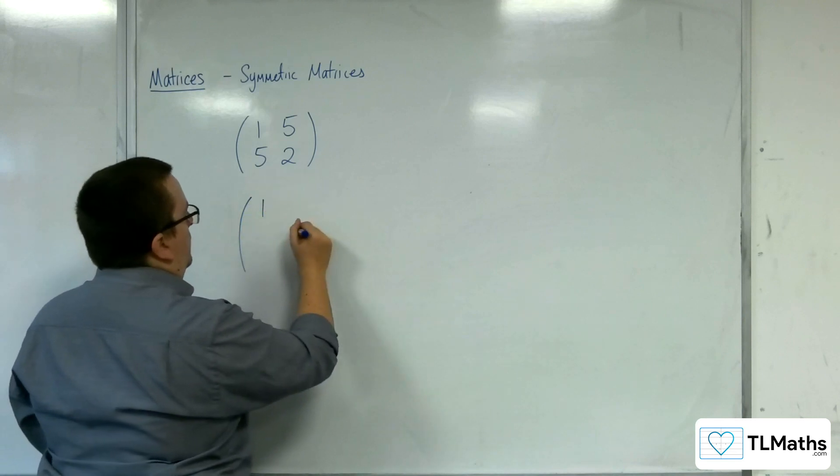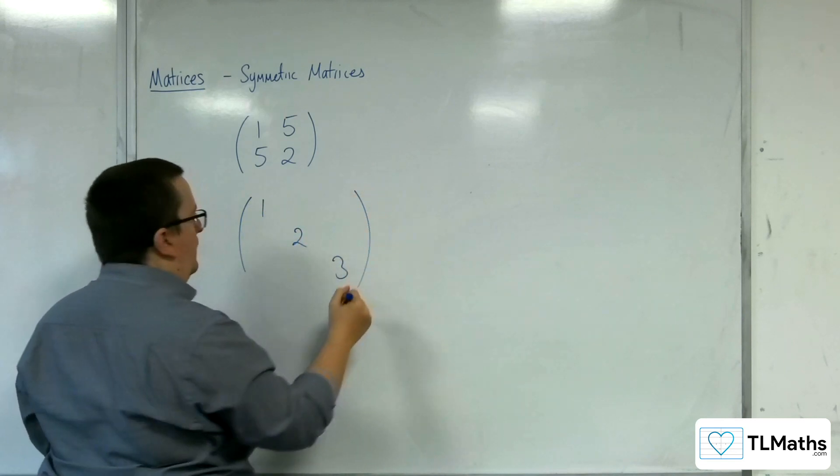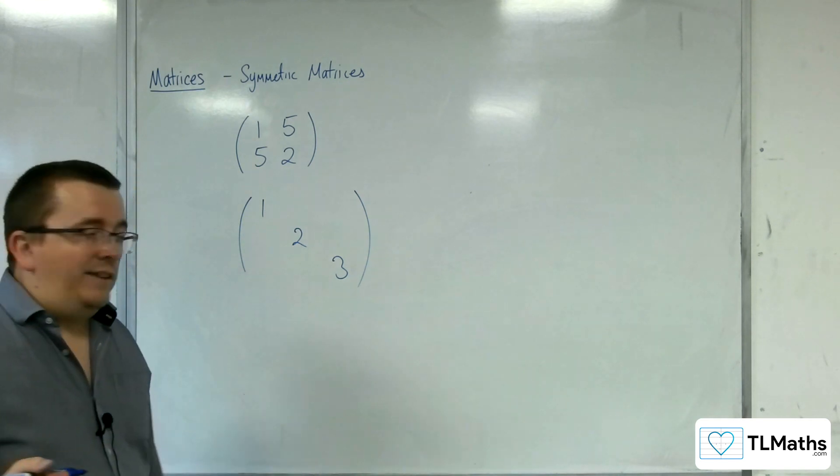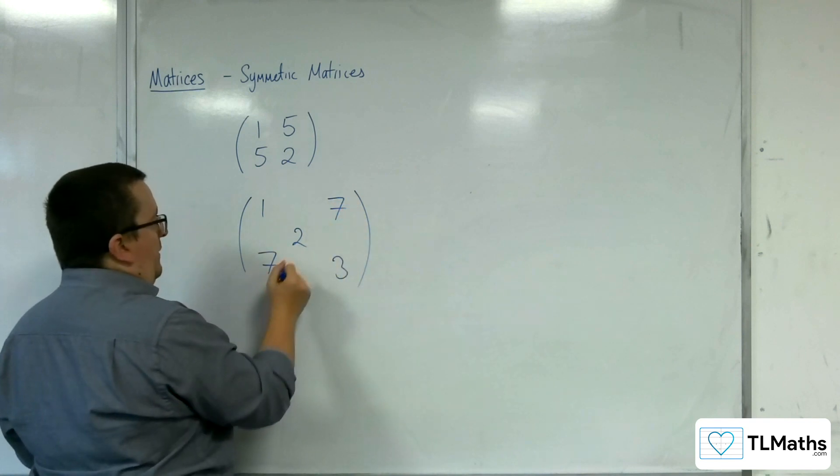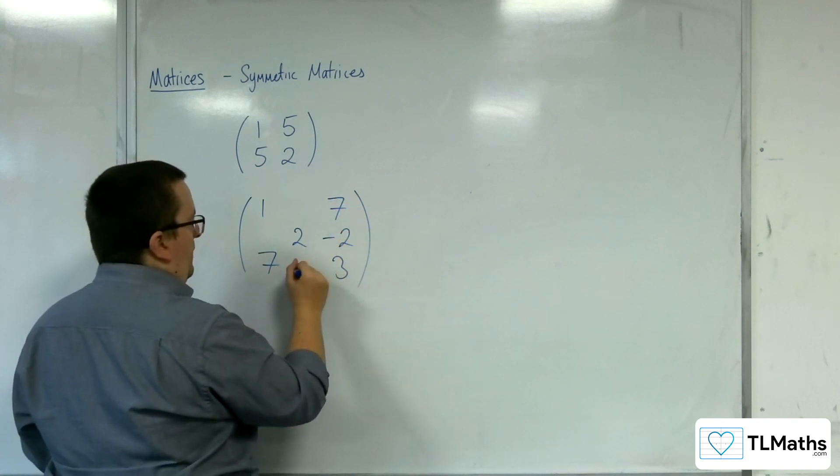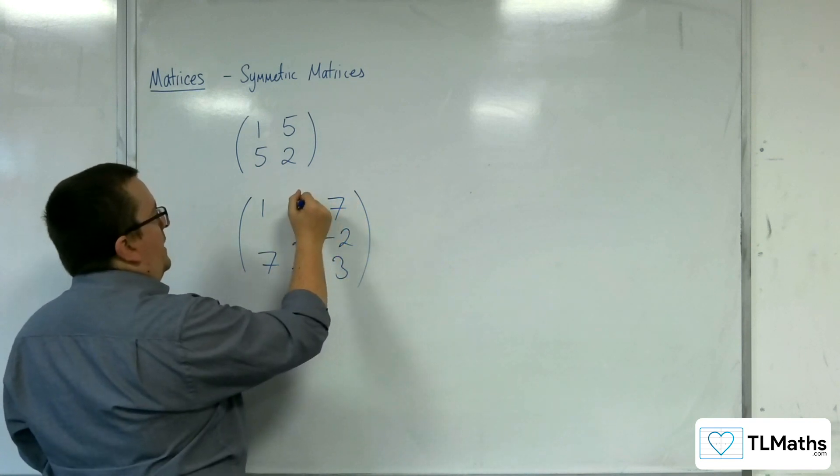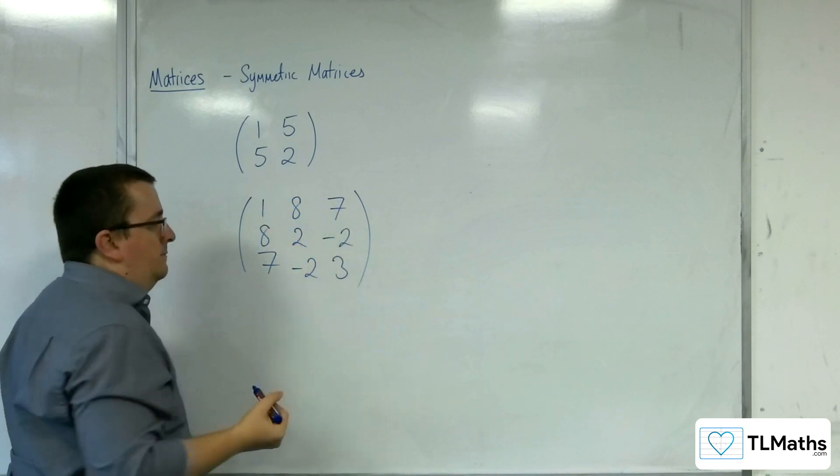3x3 matrix: one, two, three as its leading diagonal. For example, then if 7 was there, we'd have to have 7 there. If minus 2 was there, we'd have to have minus 2 there. And if 8 was there, we'd have to have 8 there.